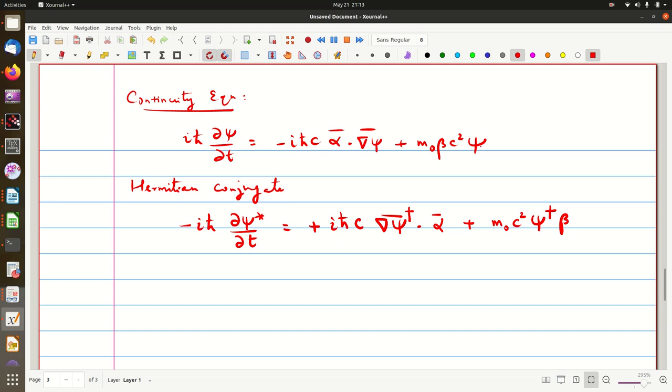So β is a matrix and ψ is a matrix. So first ψ into β and then ψ† β. Beta is real, so β† is β itself. So now what we do is, you multiply the first equation by ψ†.